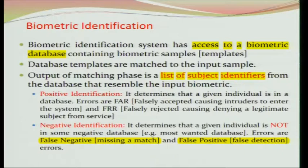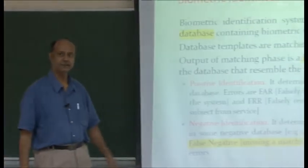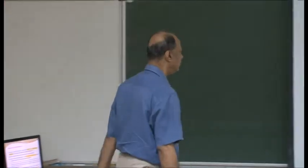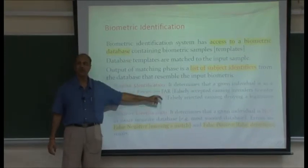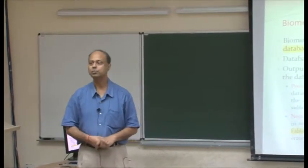In negative identification, you create a database of people you do not want to enter your complex. Given a piece of biometric data, you check whether that person is among those not supposed to enter. There are two types of errors: false negative — a person who was on the negative list gets allowed through — and false positive — a genuine person is considered as not allowed. False negative is similar to false acceptance and false positive is similar to false rejection.